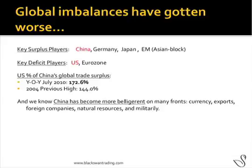Oddly, we're kind of back in the same boat. If you look at the poster children here — China and the U.S. — global imbalances have actually gotten worse since the credit crunch. How we measure that: looking year-on-year through July of 2010, China's trade surplus going to the U.S. represented 172% of its global trade surplus. Prior to that, the previous high was 144%. So in fact, it's gotten worse from the U.S. and China standpoint, and they're the two key players here.